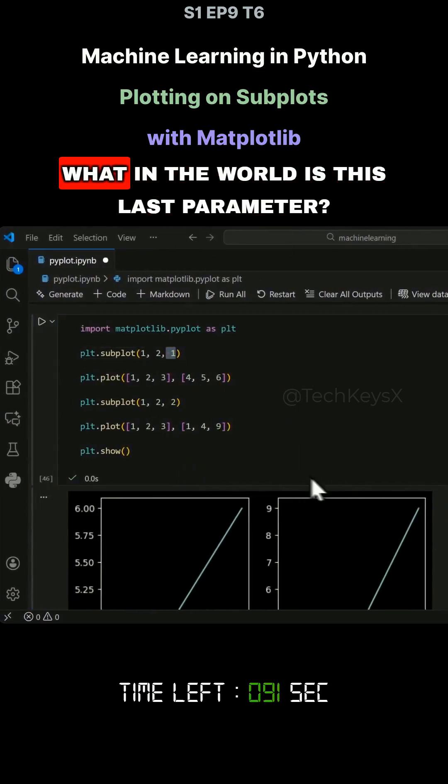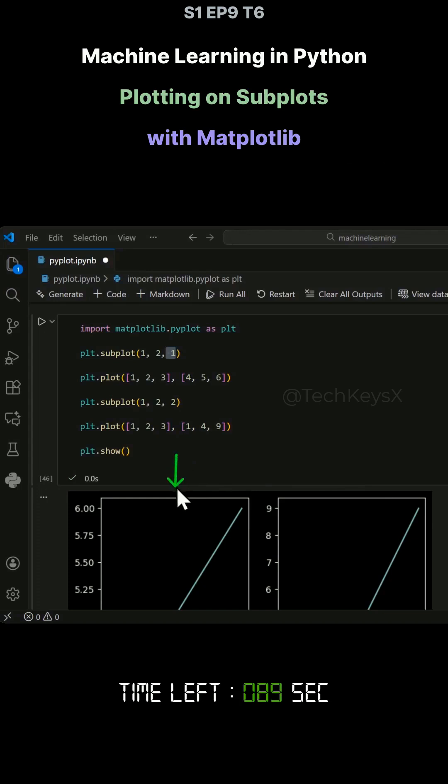And then you might be wondering, what in the world is this last parameter? What does it actually mean? This is one of the strange things. This means to select the last plot that you want the Matplotlib library to work on.